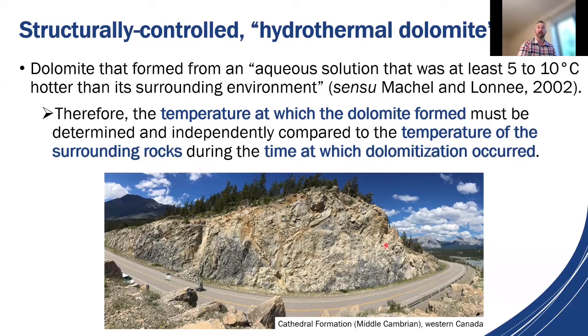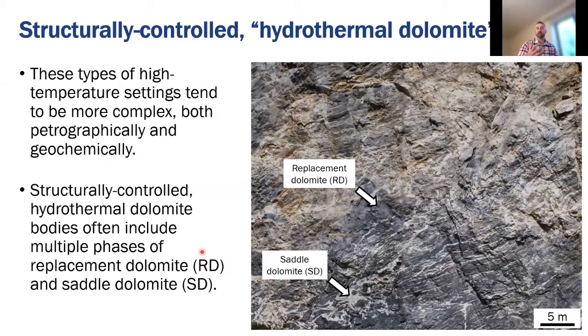This outcrop here comes from the Middle Cambrian Cathedral Formation which is located in the western Canadian sedimentary basin. I'll be showing some hyperspectral imaging from this outcrop and we'll really be looking at how the different paragenetic stages of dolomite vary with respect to this extensional fault here. Now these types of settings tend to be much more complex than those low temperature dolomites both petrographically and geochemically. If you take a look at this image on the right you can see that replacement dolomite is dark gray in color. We often can make out the original sedimentary structures and it appears quite finely crystalline under the microscope. In contrast the saddle dolomite is bright white in outcrop and it's really quite coarsely crystalline, typically up to five or six centimeters in diameter.